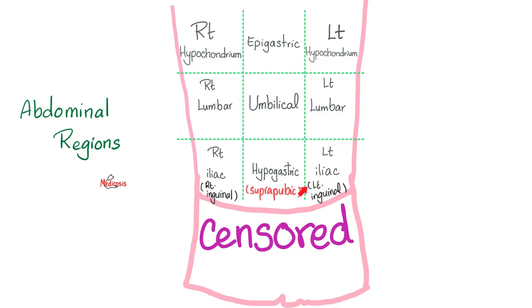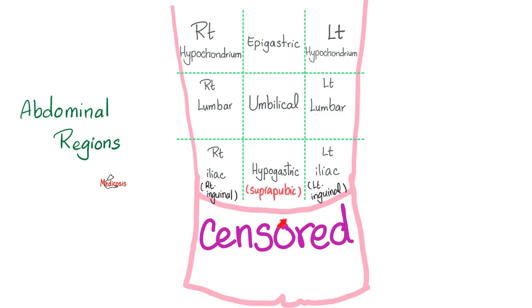Now tell me about those lovely vertical lines. They are known as the two vertical planes. If you extend that line upwards, you will hit the mid-clavicular point of the right clavicle. If you extend this one upwards, you will hit the mid-clavicular point of the left clavicle. If you extend them downwards, you will end up at the mid inguinal point — right and left — which is midway between the anterior superior iliac spine and the symphysis pubis.